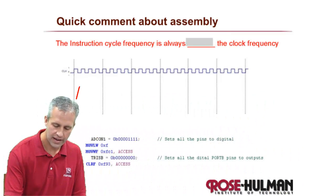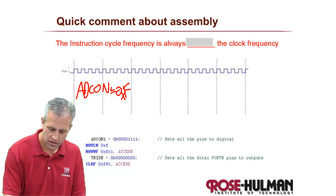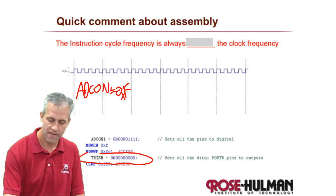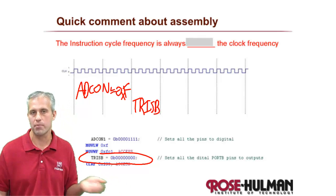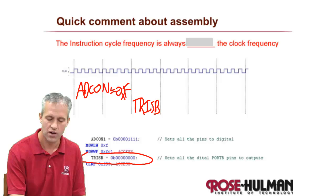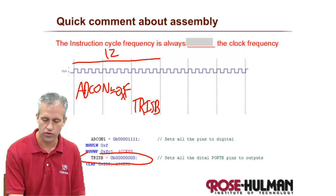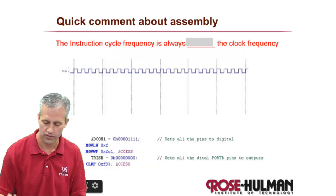So in this example, it took 8 clock cycles to do the ADCON1 equals 0xF assignment. And then the TRISB setting, since it was getting set to zero, could actually be done faster — it actually did that in only one clock cycle, because setting it to zero can happen faster than setting it to some other value. So this total thing took 12 clock cycles to run those two statements. It's kind of neat, but a level of detail you don't really care about.